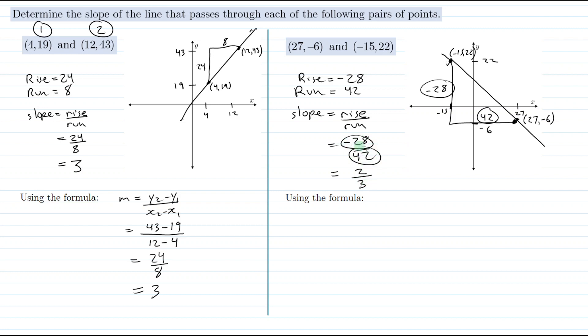And notice we had a negative divided by a positive which gives us a negative result. We expected that because this line decreases from left to right, so it has a negative slope.